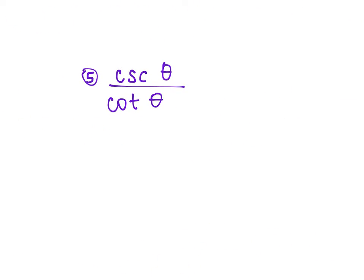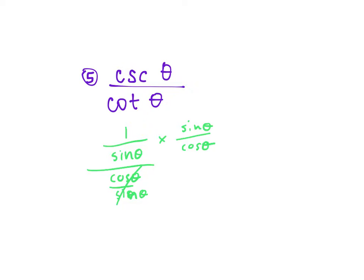Number 5: cosecant is 1 over sine θ, and cotangent is cosine over sine. Since we have a fraction divided by a fraction, keep, change, flip. The sine on top cancels with sine on the bottom, leaving 1 over cosine. Cosine on top cancels, and 1 over cosine is secant.